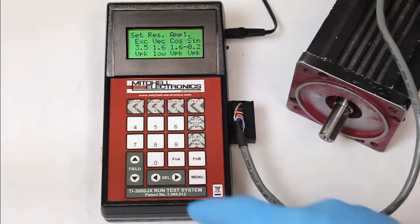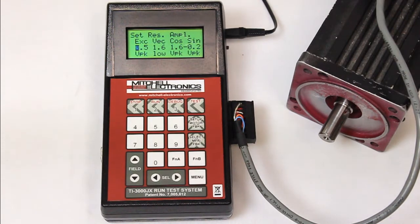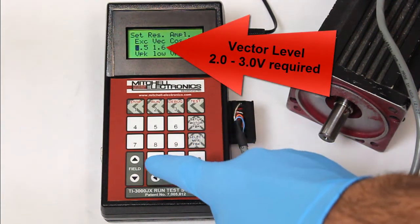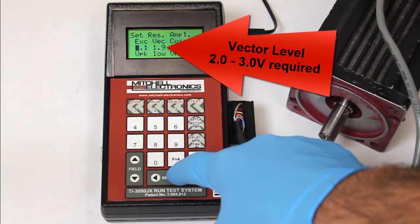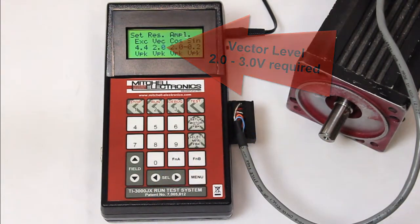Press the down arrow to access the excitation voltage selection. Adjust your excitation voltage until the vector level is between two to three volts. The vector level field will display low or high if out of range.